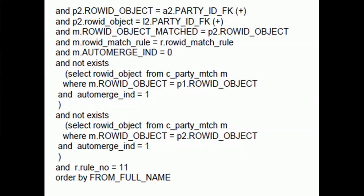You might have noticed this is similar to the previous query, but there are a couple of changes. We have m.roid_match_rule equals r.roid_match_rule. Then we have auto_merge_indicator equals 0 - that means these are not part of the auto merge but are for the manual merge. We also add NOT EXISTS: select row_id_object from c_party_match where m.row_id_object equals p1.row_id_object and auto_merge_indicator equals 1. Also we write another NOT EXISTS: select row_id_object from c_party_match where m.roid_object equals p2.roid_object. Both p1 and p2 conditions are important here.